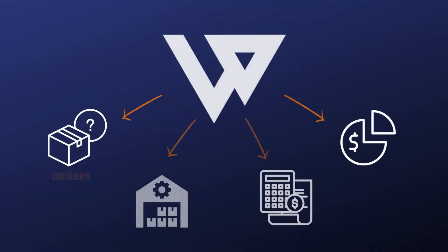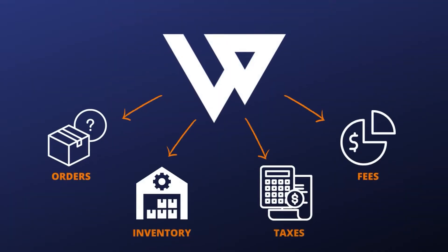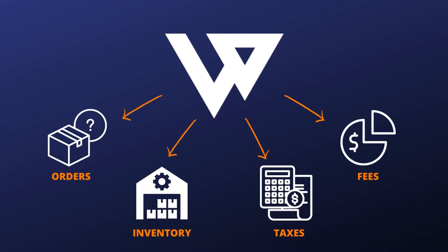Let Webgility simplify all of this for you with accounting automation. Webgility is an all-in-one e-commerce automation workspace that allows you to connect directly to your stores like Amazon or Walmart and seamlessly download and post your orders directly into QuickBooks.